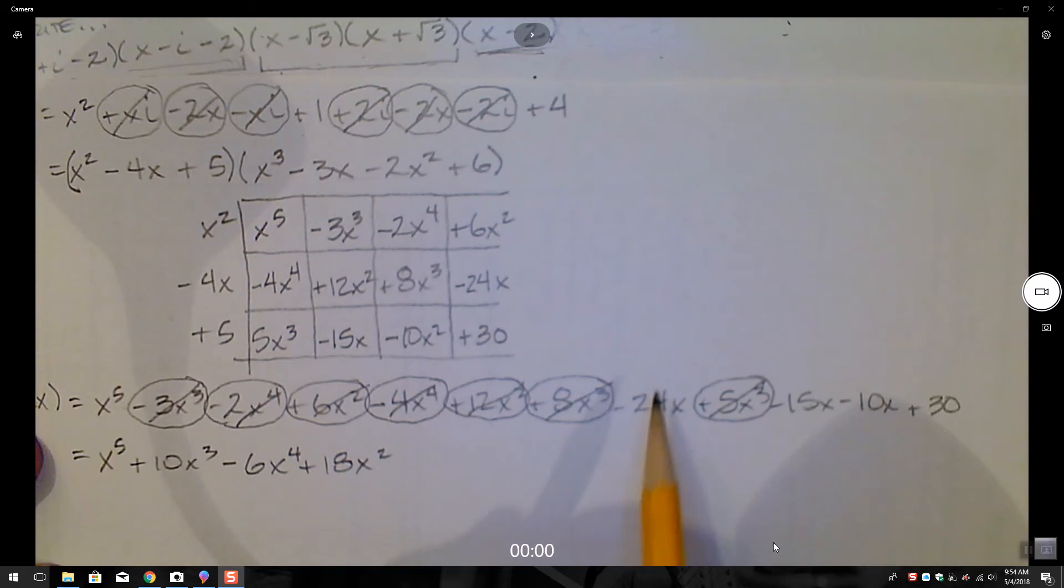And we have a minus 24x, minus 15x, and a minus 10x. So minus 25, minus 24 is minus 49. All right. I'll take it. And then I only have plus 30 over here.